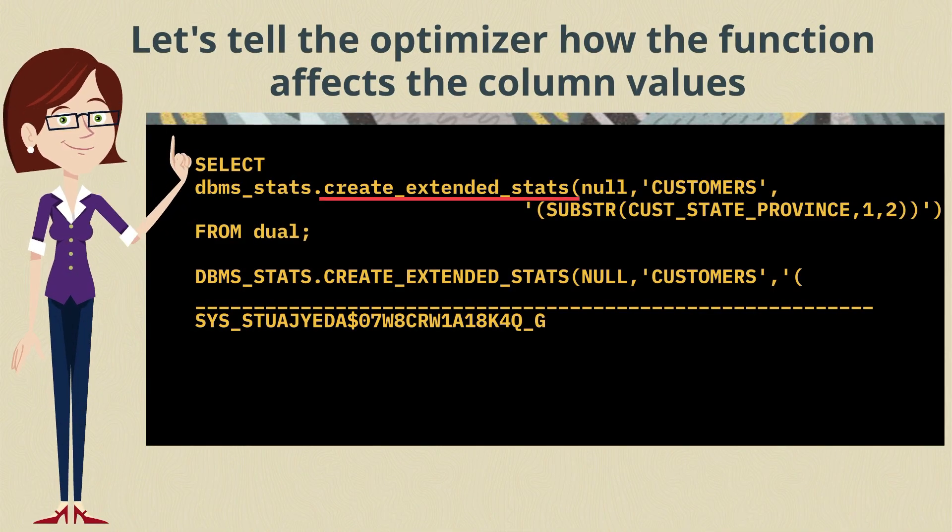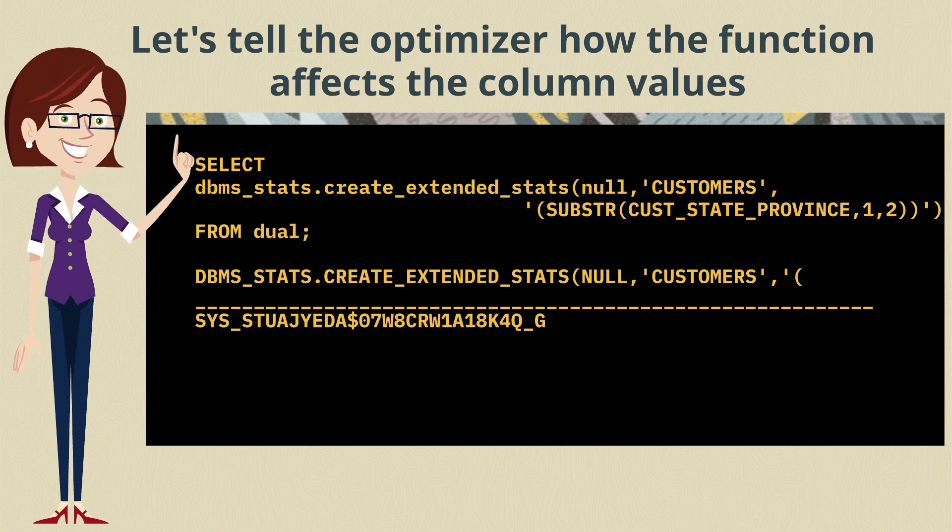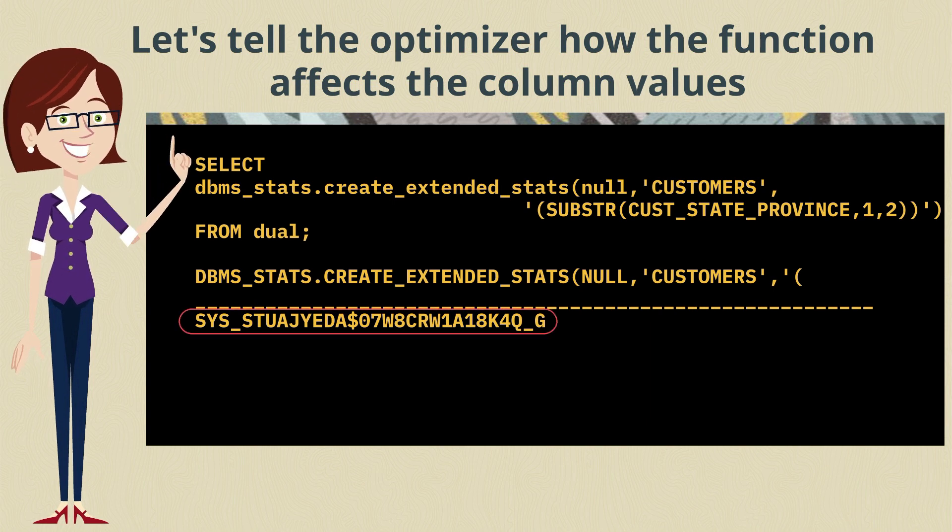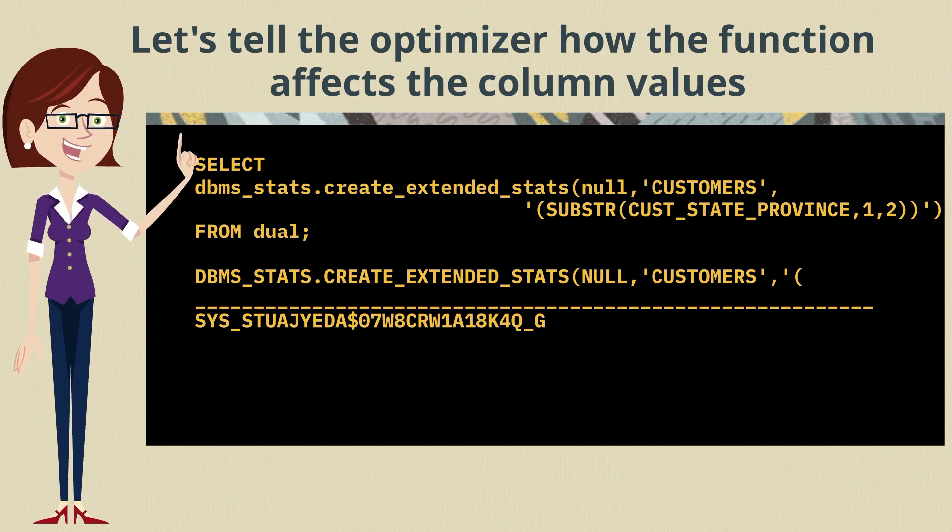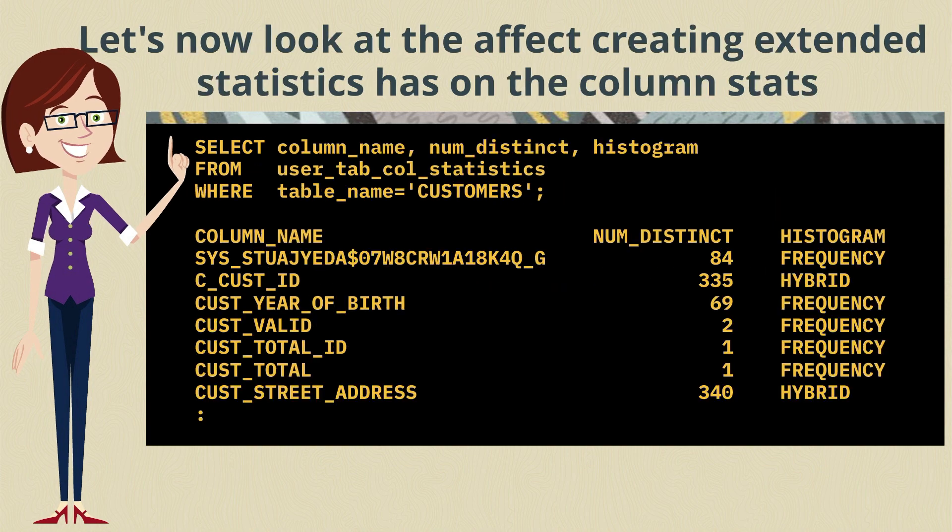To create the extended statistics, what we need to do is call the DBMS stats, create extended stats function. And we pass there the table name and the expression that we want to create the extended stats on. The output of that is a system generated named virtual column. And that's what you see being displayed there. That's why I'm doing the select star from dual. So we can see that system generated name for the virtual column.